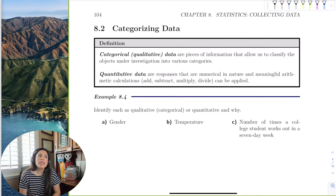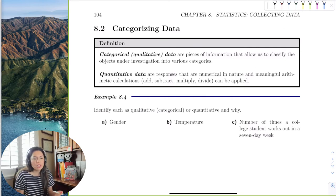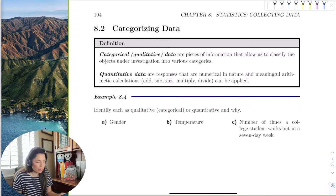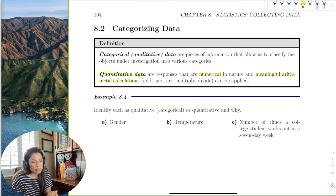So quantitative just means that our responses from the subjects in our sample is numbers, and we can apply arithmetic operations. And with categorical, they're categories, so you really can't do much with it except assess the categories. So here, quantitative means that the answers are numerical, and the arithmetic operations can be applied.